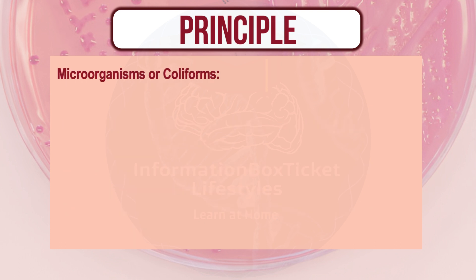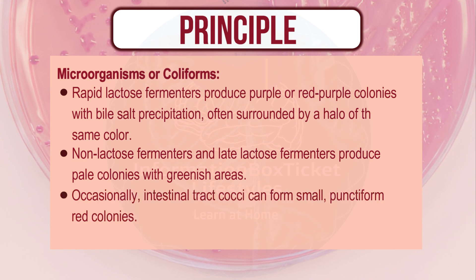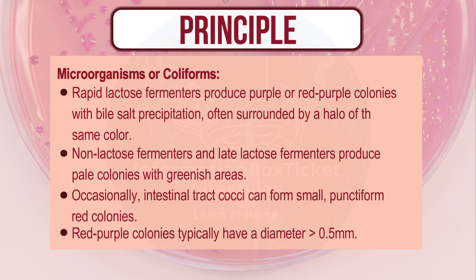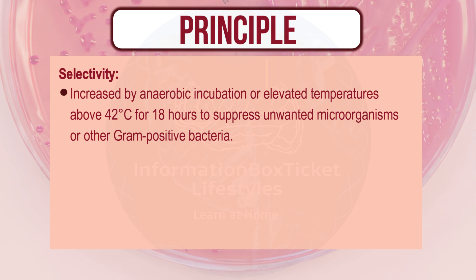Rapid lactose fermenters produce purple or red-purple colonies with bile salt precipitation, often surrounded by a halo of the same color. Non-lactose fermenters and late-lactose fermenters produce pale colonies with greenish areas. Occasionally, intestinal tract cocci can form small, punctiform red colonies. Red-purple colonies typically have a diameter ≥ 0.5 mm. Selectivity is increased by anaerobic incubation or elevated temperatures above 42°C for 18 hours.